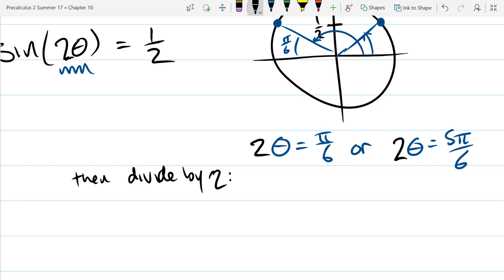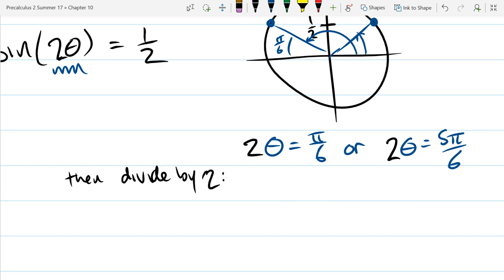We're dividing both equations by two. So theta equals pi over 12, or theta. Oh, and before we do this I completely forgot. We need to add. Wow. Rotations.